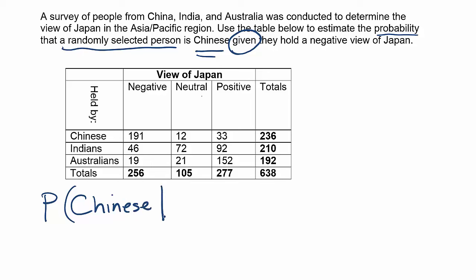The phrase 'given that' is represented by a vertical bar. So whatever follows that is the part that goes after the bar: 'given they hold a negative view of Japan.' I'm just going to abbreviate that as 'neg' for negative view. So there's my probability statement.